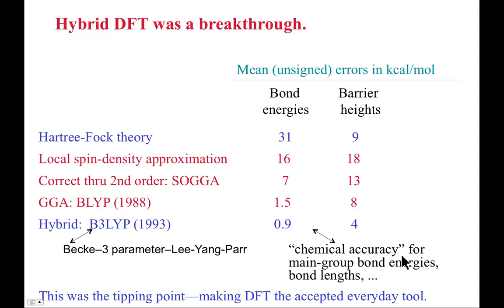I keep saying it worked really well. Let's actually look at some numbers. Hybrid DFT was quite a breakthrough. In the last set we looked at, the generalized gradient approximations with BLYP, we've gotten the bond energies down to an average error of 1.5 kcal per mole, and the barrier heights to 8 kcal per mole. The hybrid approach has now gotten to chemical accuracy, so below 1 kcal per mole in bond energies, and it's brought the barrier heights down by a factor of 2. So 4 kcal per mole is still a little less than we'd like, but we're paying effectively Hartree-Fock cost and we're achieving accuracy that otherwise would require much more expensive post-Hartree-Fock models. This was basically the tipping point. Once this appeared, DFT became the accepted everyday tool for molecular modeling purposes.